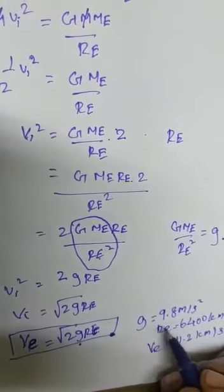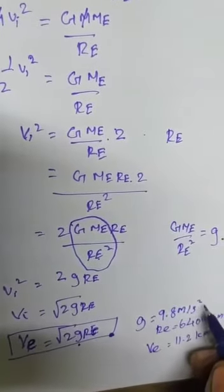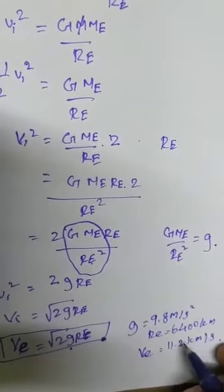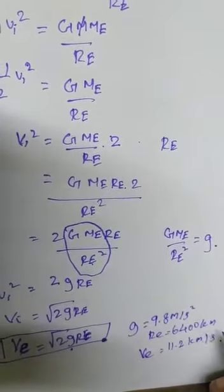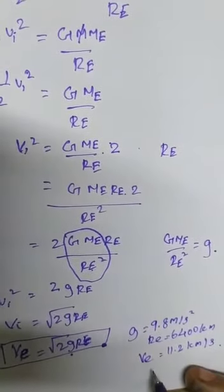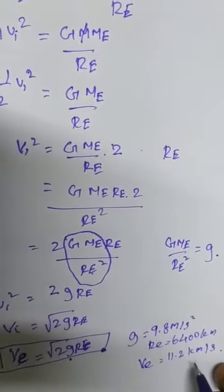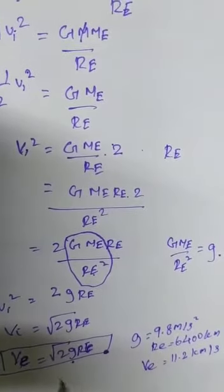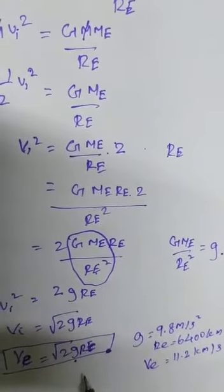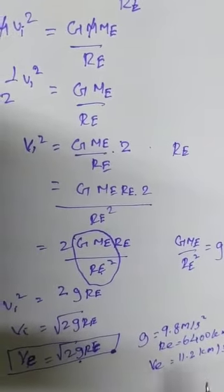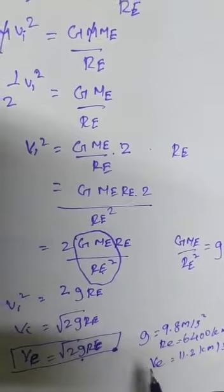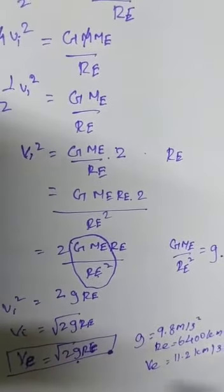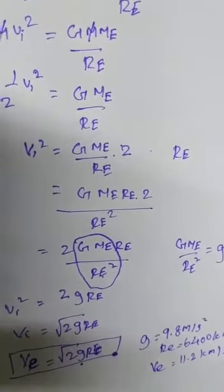Acceleration due to gravity is 9.8 meters per second squared. The radius of the Earth is 6400 kilometers. So the escape speed of the object equals 11.2 kilometers per second. This escape speed does not depend upon the mass of the object or the direction in which we are throwing it.